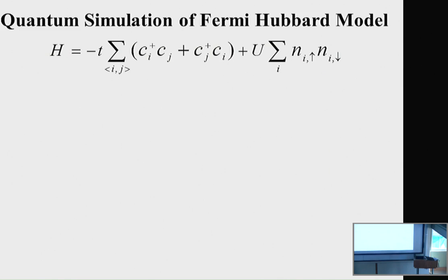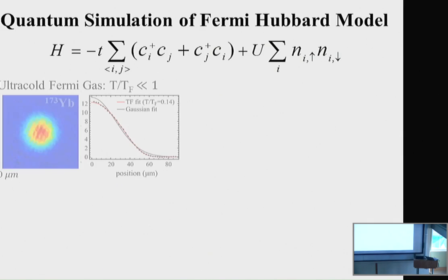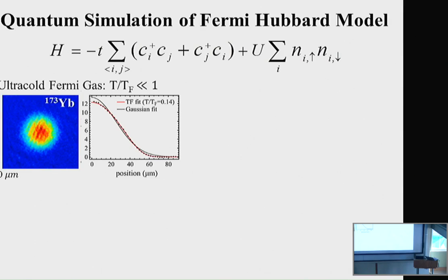The first part of my talk is about quantum simulation of the Fermi-Hubbard model. Since classical numerical simulation methods are inefficient for the study of the Fermi-Hubbard model, the quantum simulation approach using ultracold atoms in an optical lattice is very important for this problem. We can prepare ultracold Fermi gases with a temperature much below the Fermi temperature by evaporative cooling.